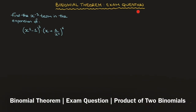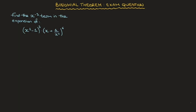We now work through another exam-style question involving the binomial theorem. We're asked to find the x to the power of negative 3 term in the expansion of the product of two binomials: the first being x squared minus 1 raised to the power of 3, the second being x plus 1 over x squared, all raised to the power of 6.